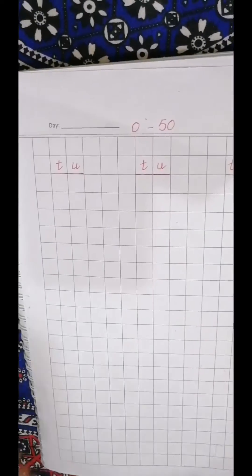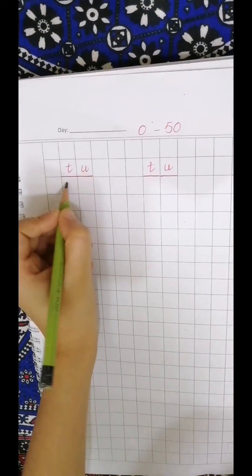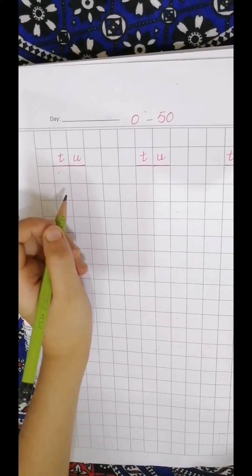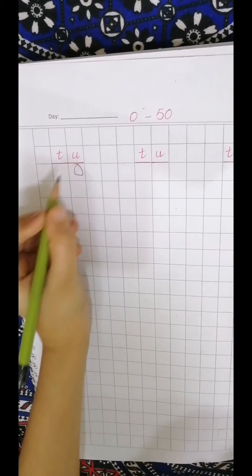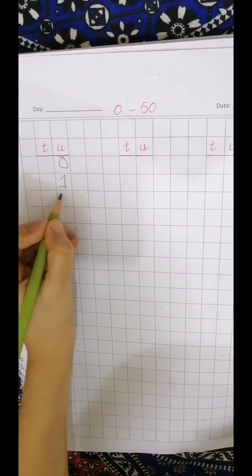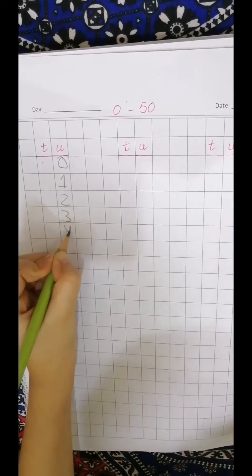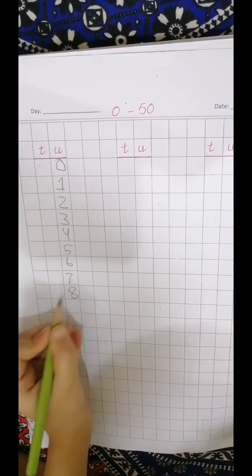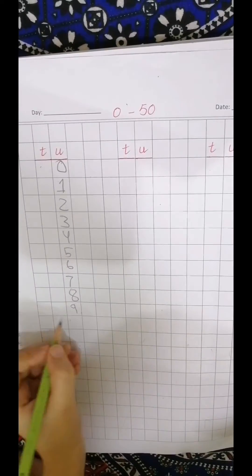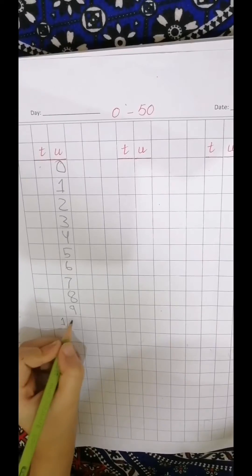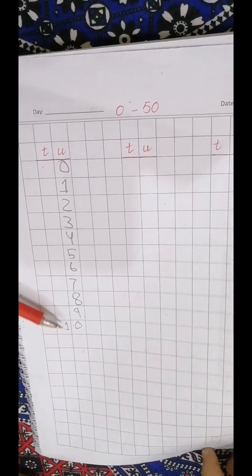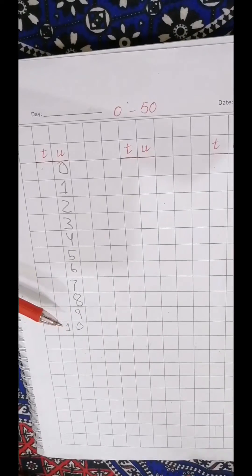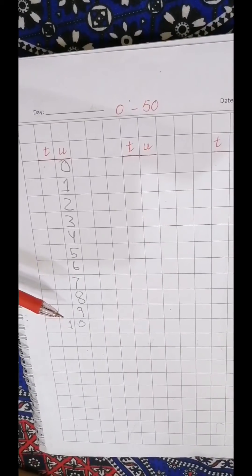Start from zero. Zero is ten or unit ten unit. Zero one — how many tens in one ten? One. And how many units in ten? Zero.